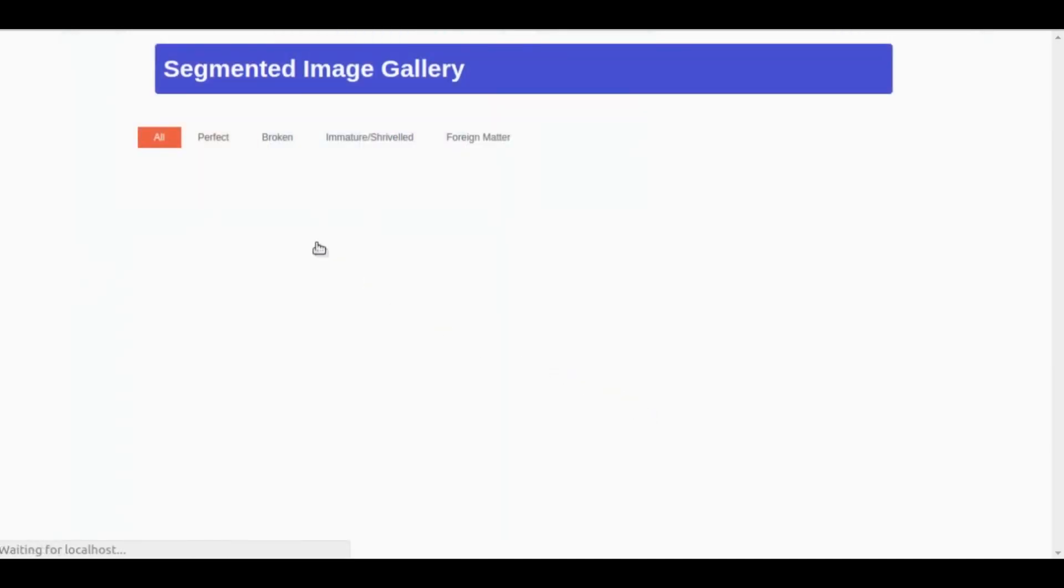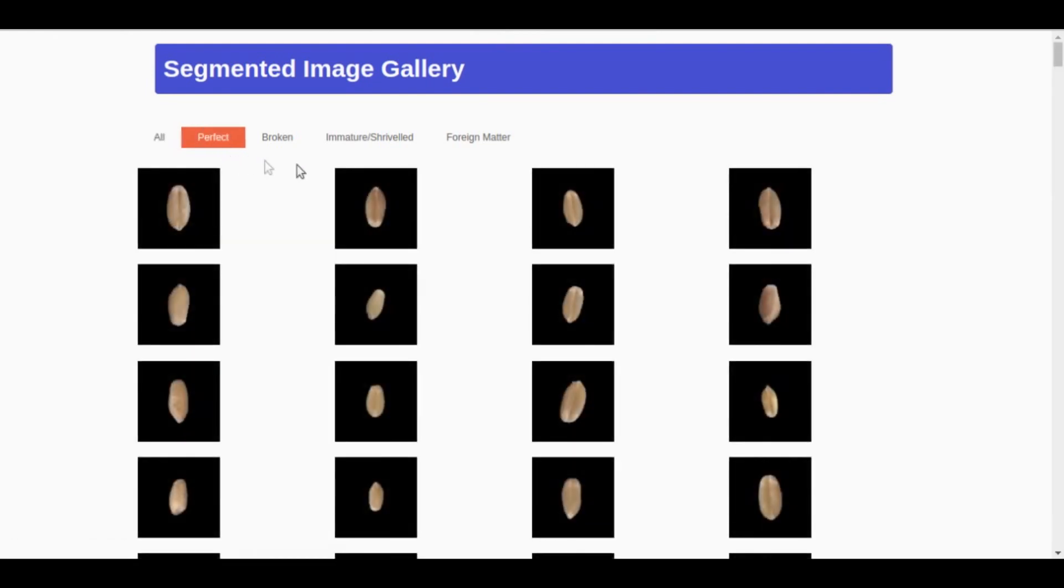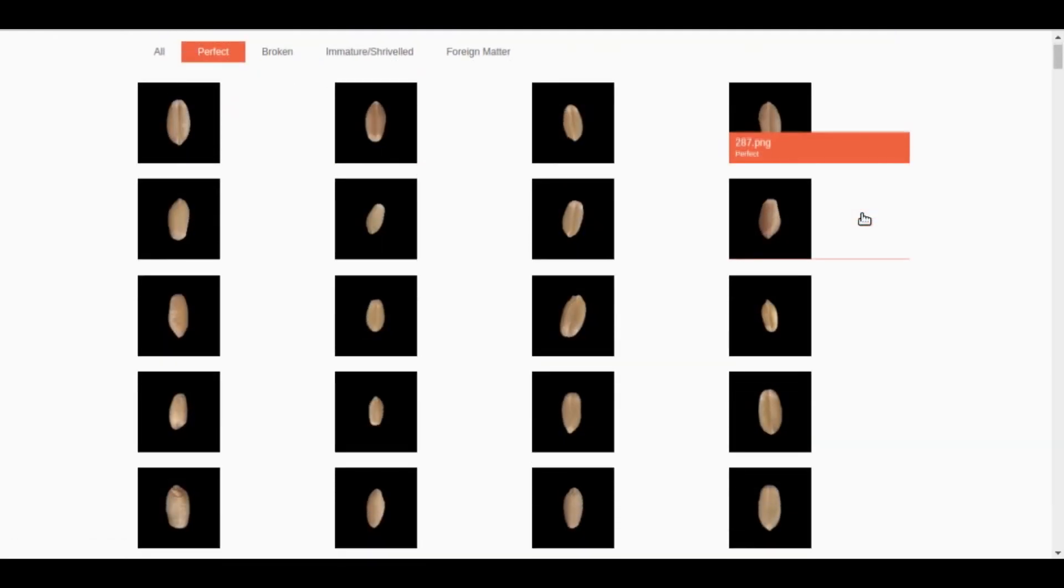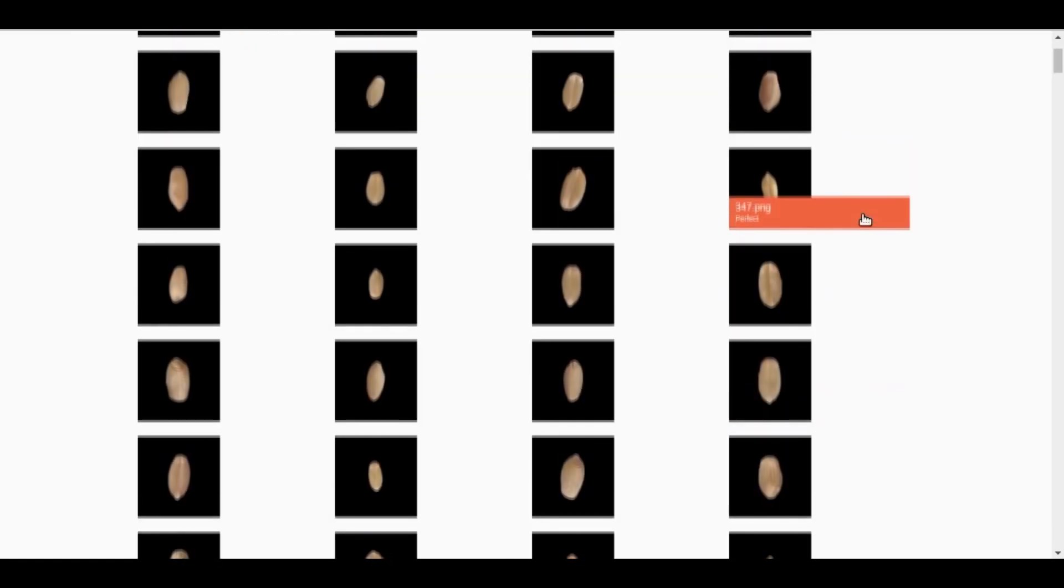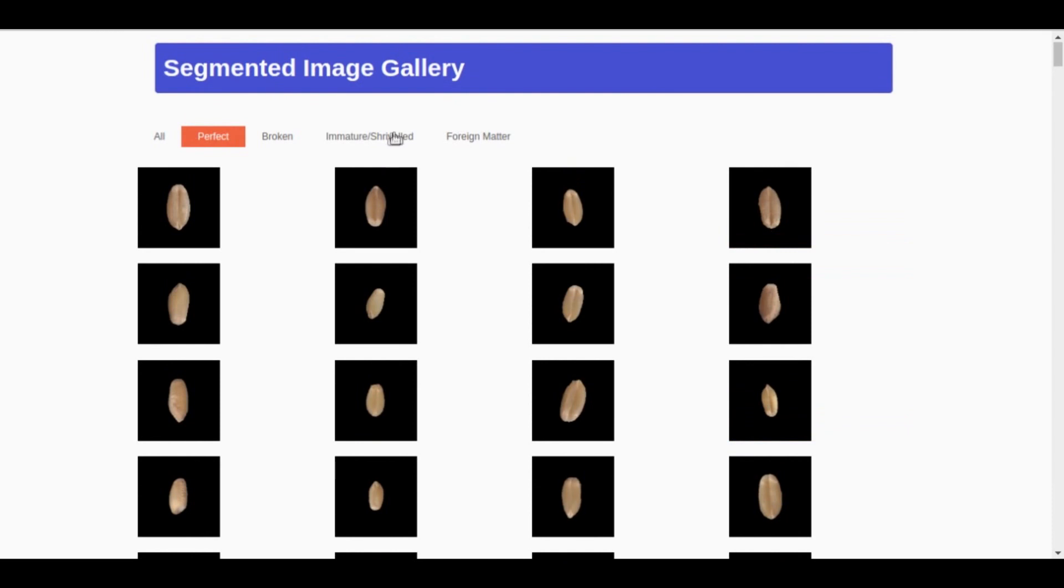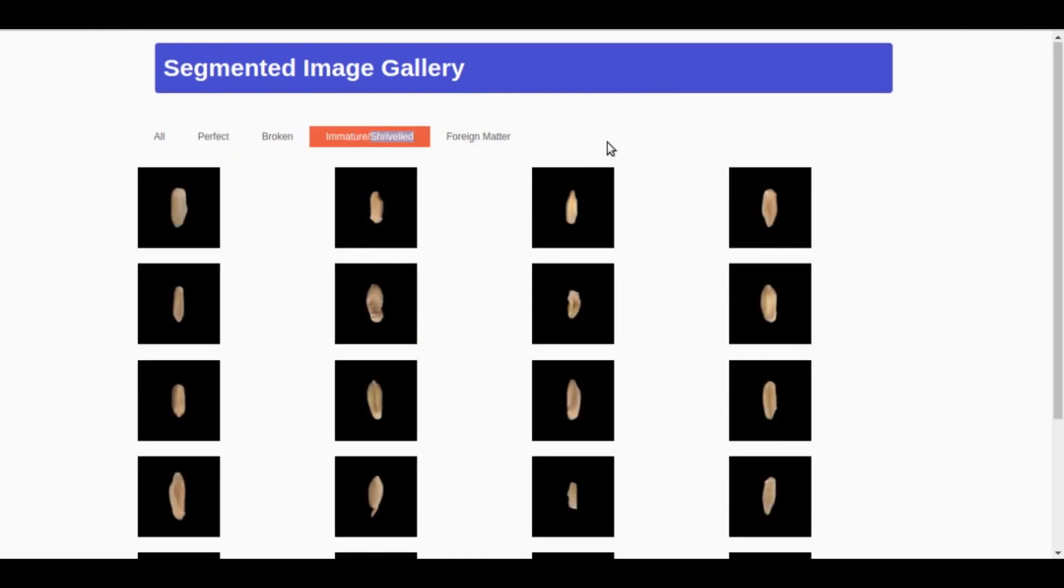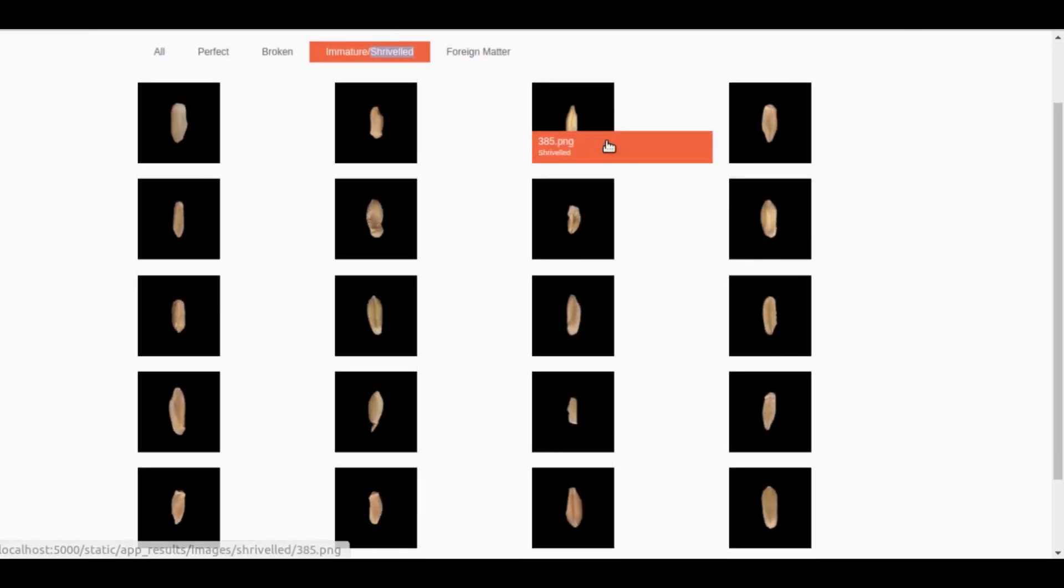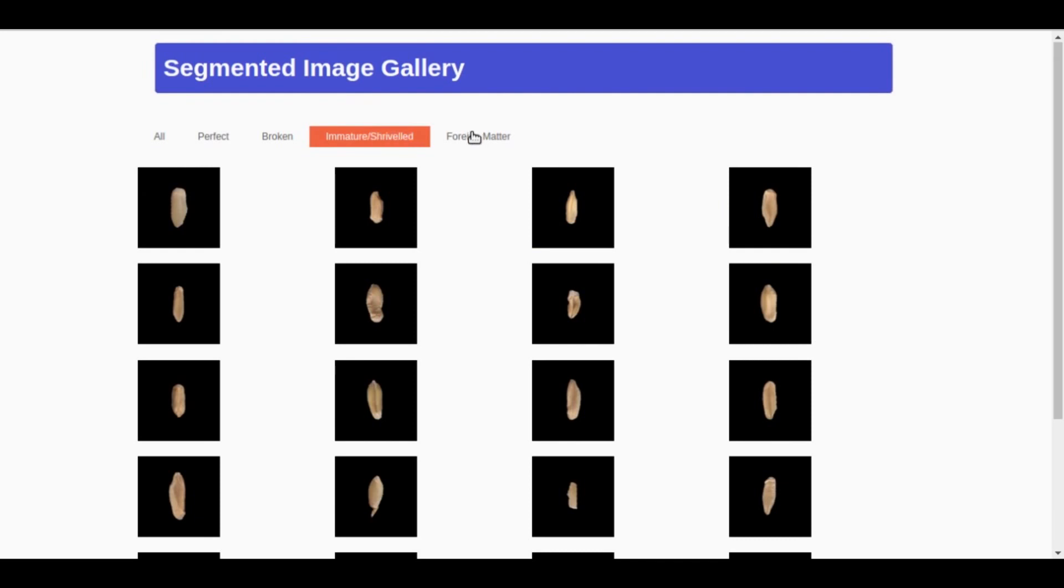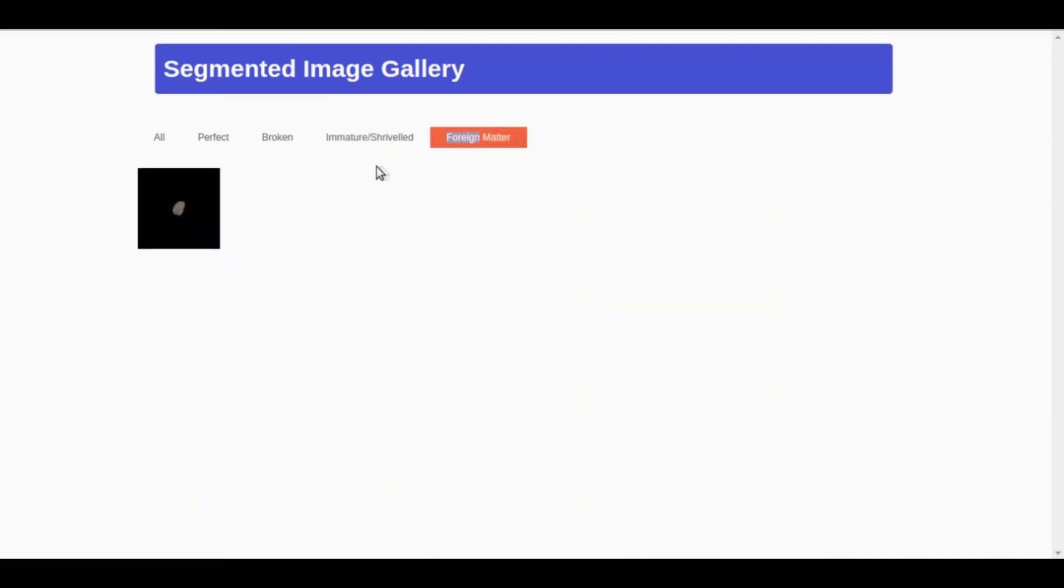The grain gallery gives you the option to analyze the category-wise classified grains. These are the perfect grains. You may also see the grains labeled as shriveled by MAT. So, Yogesh's sample has only one foreign matter.